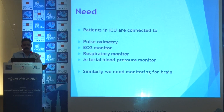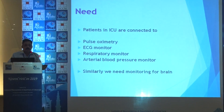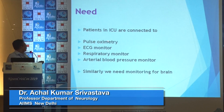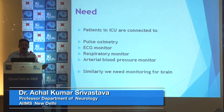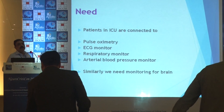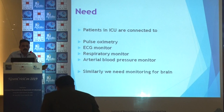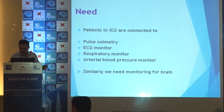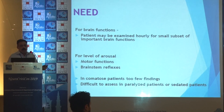As you understand, EEG is frequently done in EEG labs, but here we wish to do it in a critically ill patient — that means a patient in ICU. When a patient is in ICU, they are connected to pulse oximetry, ECG monitor, respiratory monitor, and arterial blood pressure monitor. But all these monitors tell you about the cardiovascular system and respiratory system. What about the brain? That is what we will be discussing today.